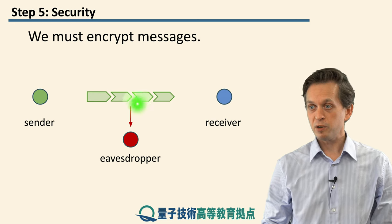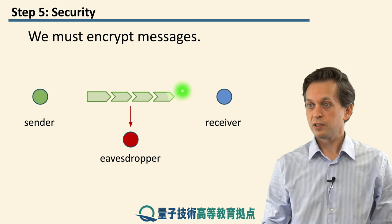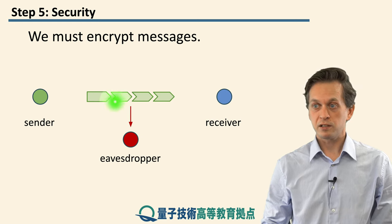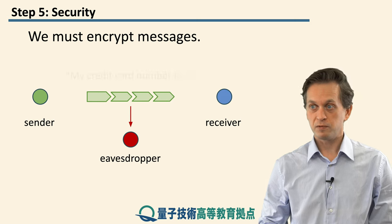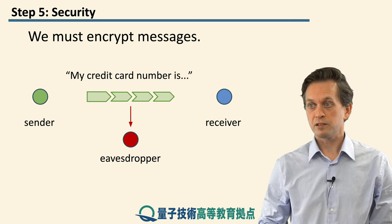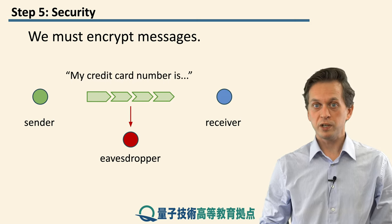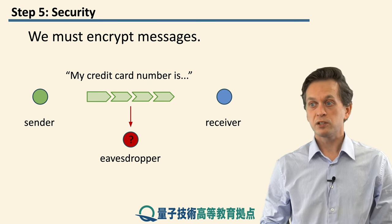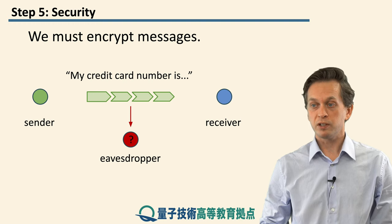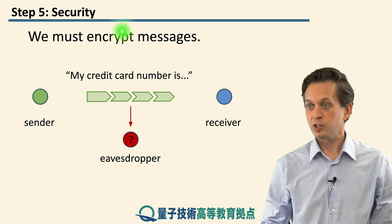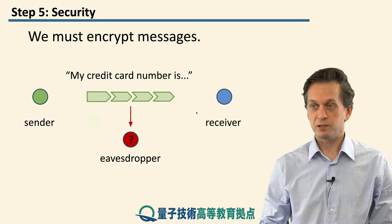So if the channel is encrypted, then the eavesdropper does not gain any access to the contents of the message. You can send your sensitive information and the eavesdropper, even if they get access to the encrypted message, cannot decrypt it and they are left in the dark about the contents of the message.